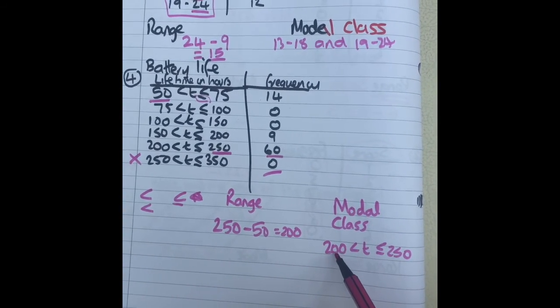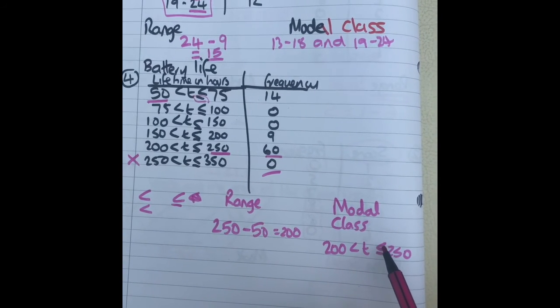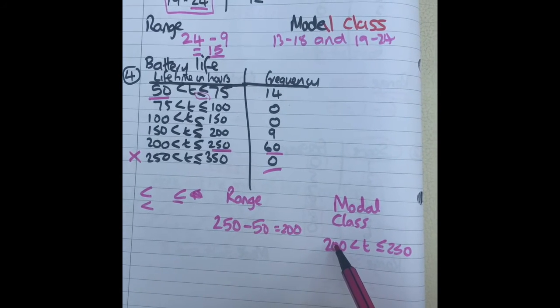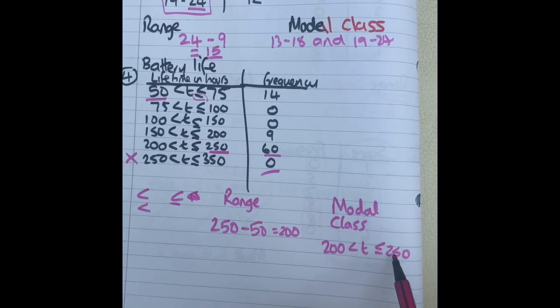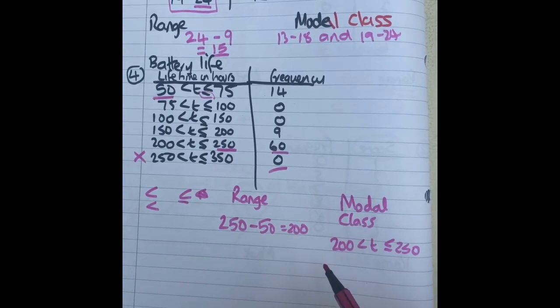Just for a refresher, that means that t is greater than 200 and less than or equal to 250. So it can't be 200 but it can be 250. So it's anything between 200 and 250 but not 200. That's the range and modal class.